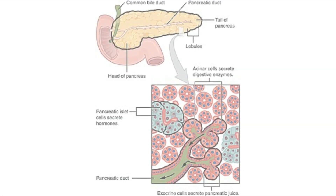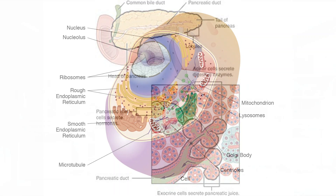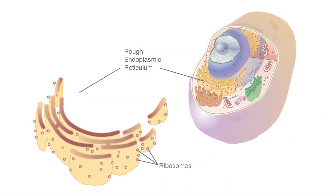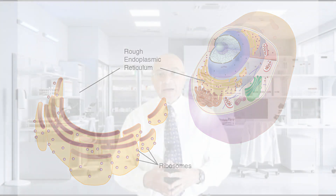Digestive enzymes are produced in the acinar cells of the pancreas. The whole process hinges on the malfunction of structures in the cell known as organelles — in particular, the endoplasmic reticulum, an organelle responsible for the production and secretion of digestive enzymes.